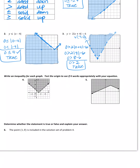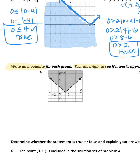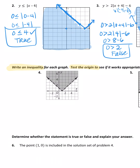Now let's look at the bottom of the page: write the inequality for the graph, then test the origin. For number four, let's find our vertex — it's at (1, 0). We know it's an absolute value function pointing upward, so no negative. The expression is |x − 1| — remember to change the sign of the x-coordinate. It's shading up, so it's greater than, and it's a dotted line, so no 'or equal to.'